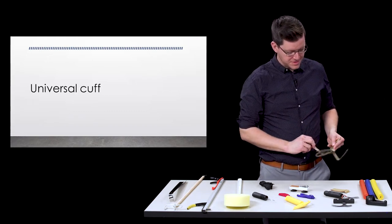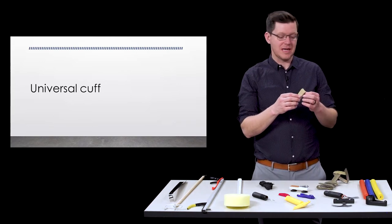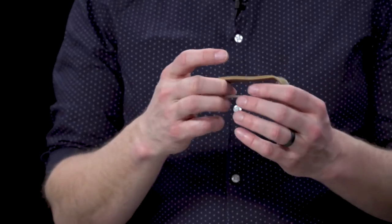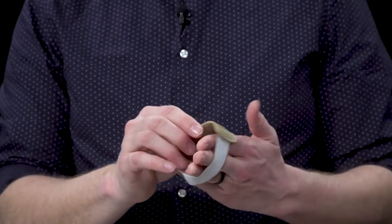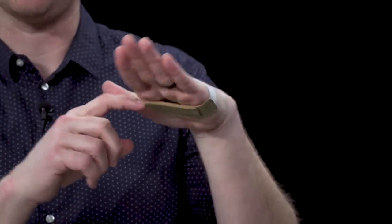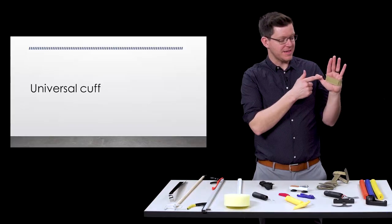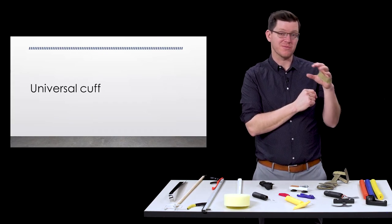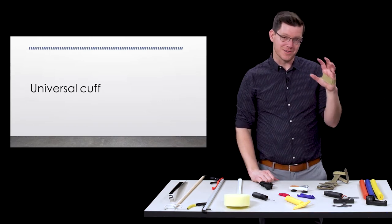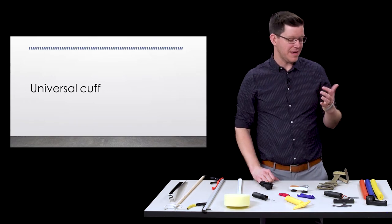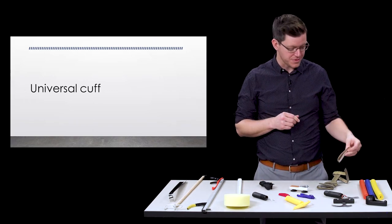Similarly there's this device called the universal cuff which has a similar slot. It's a little bit easier to put on and if you don't have that wrist weakness it's something you can slip on to your hand. Once again without having any hand function you can hold a fork, a pen, a stylus, a toothbrush, a razor, all the things that can kind of fit in this little gap. It's cheap, easy to use, and easy to take off and on for a caregiver.